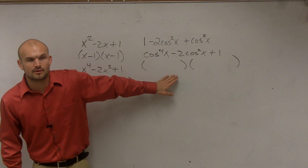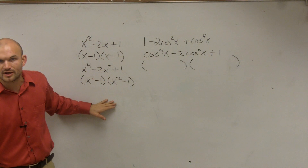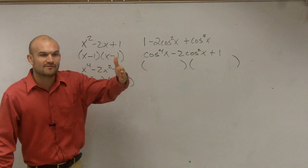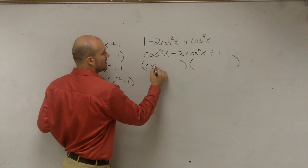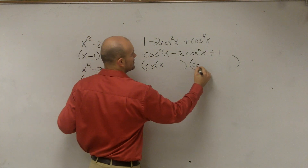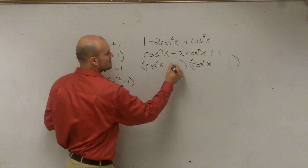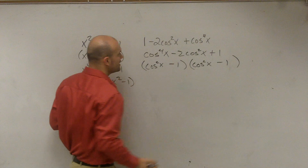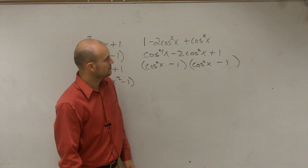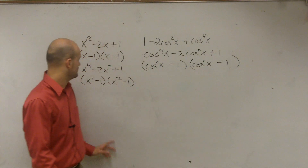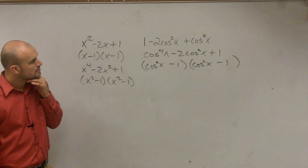So it would be cosine squared of x minus 1, times cosine squared of x minus 1. If you look at how I factored it with just regular variables and compare to these factors — cosine squared of x times cosine squared of x gives you cosine to the fourth. And then putting negative 1 and negative 1 gives you plus 1 and minus 2 cosine squared.